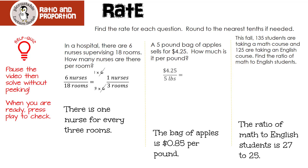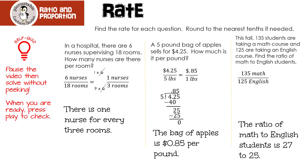A five-pound bag of apples sells for $4.25 — how much is it per pound? Divide: bring out the decimal; 8 times 5 is 40; bring down the 5; 5 times 5 is 25 — so 85 cents per pound. The last one is actually a trick question. Find the ratio of math to English students: 135 students in math, 125 in English. We reduce: 5 times 27 is 135, and 5 times 25 is 125. Cancel out the common factor — there are 27 math students for every 25 English students, or the ratio is 27 to 25.